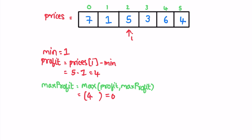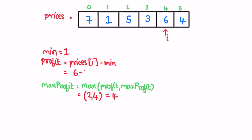Current profit is 4 and max profit was 0, so max profit updates to 4. Next iteration: 3 is not less than 1, so minimum stays at 1. The profit is 3 minus 1, which is 2. Current profit 2 is less than max profit 4, so max profit remains 4. Next iteration: i is pointing at 6. 6 is greater than 1 so minimum stays 1. Profit is 6 minus 1, which is 5. Max profit updates from 4 to 5.